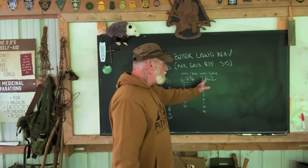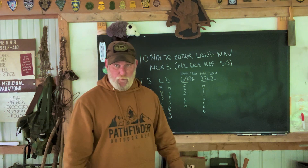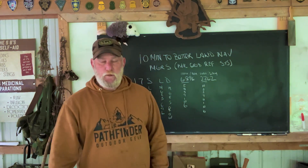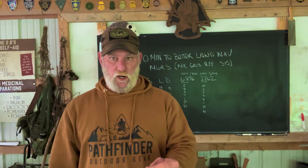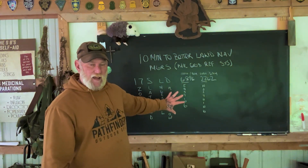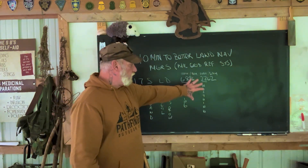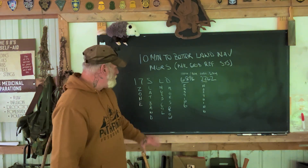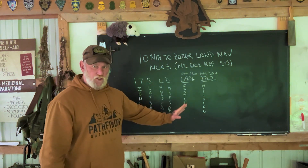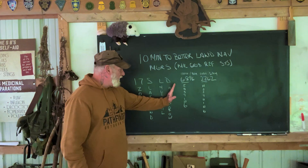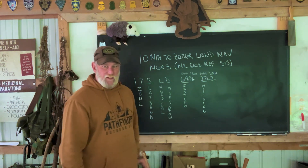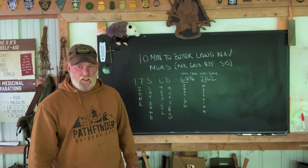Depending on how your GPS is set up, you may have a 10-digit grid coordinate. But you can't plot a 10-digit grid coordinate with a protractor. We'll talk about how these grid coordinates work on a map in a moment, but I wanted to give you a basic understanding of what these letters and numbers mean before getting into the actual grid coordinate itself.